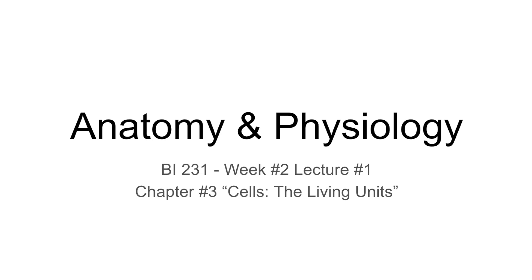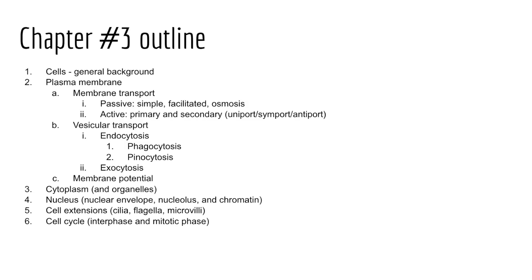Welcome to week two of anatomy and physiology. This week we'll be studying chapter three where we'll consider cell biology, taking that step in hierarchy from the chemical level to the cellular level of the body. In the first lecture of this chapter, we'll consider cells by talking about some basic concepts, looking at cell background, then spending time talking about the cell membrane or the plasma membrane, more about its composition as well as how substances pass across the cell membrane, either into or out of the cell.